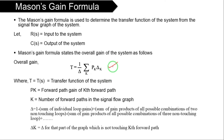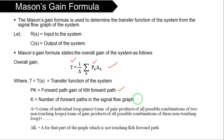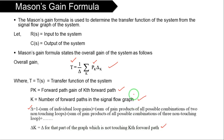Now I will tell you how to use this formula to find the transfer function for the given signal flow graph. I will take an example, but before that I will tell you some important points. T is the transfer function of the system. P means forward path gains of the kth forward path. K is the number of forward paths in the given signal flow graph. For delta, the formula is: 1 minus sum of individual loop gains, plus sum of gain products of all possible combinations of two non-touching loops, minus sum of gain products of all possible combinations of three non-touching loops. Delta k is the value of delta for that part of the graph which is non-touching with the kth forward path.